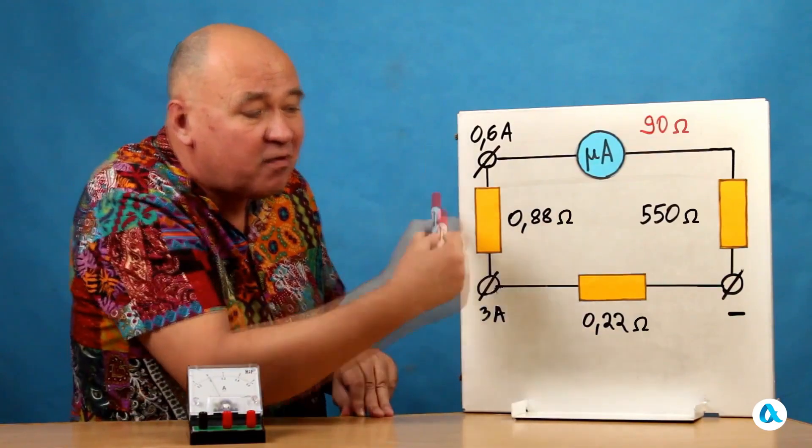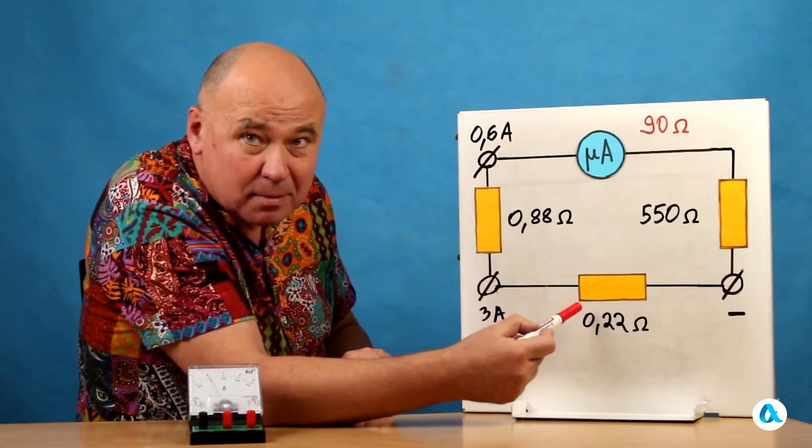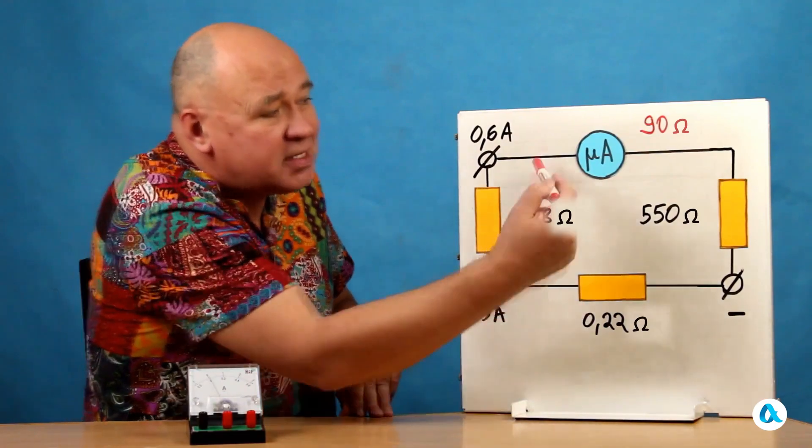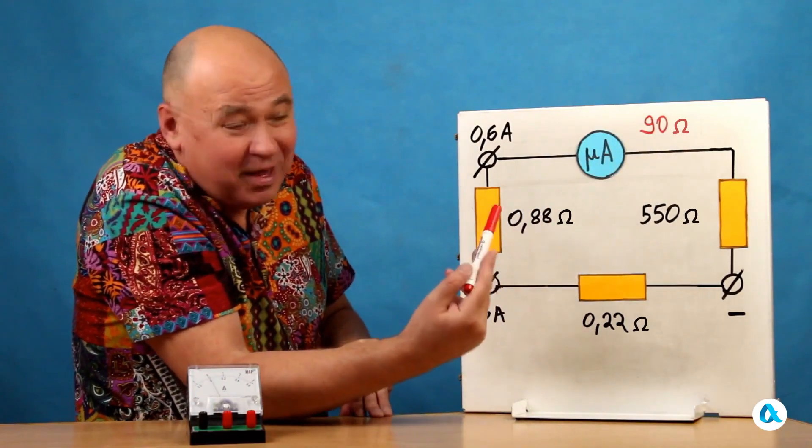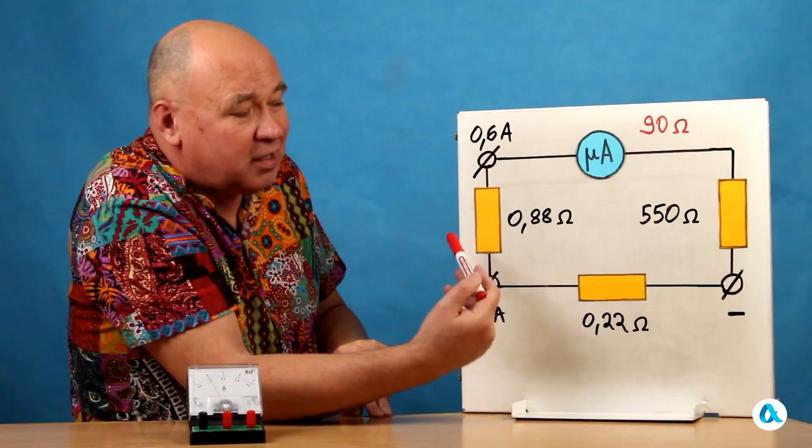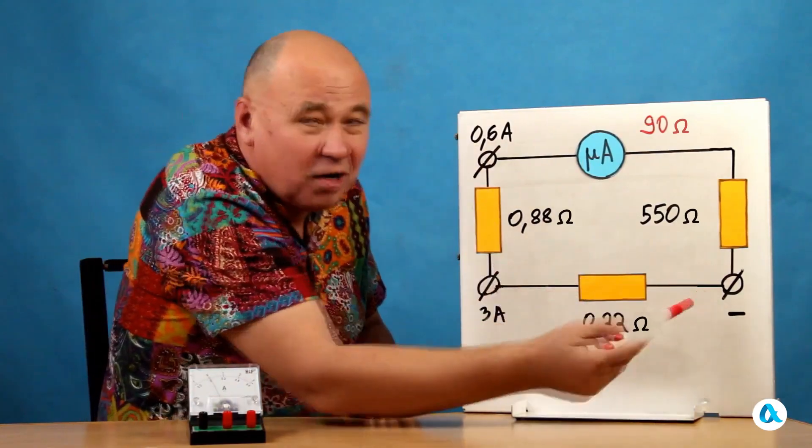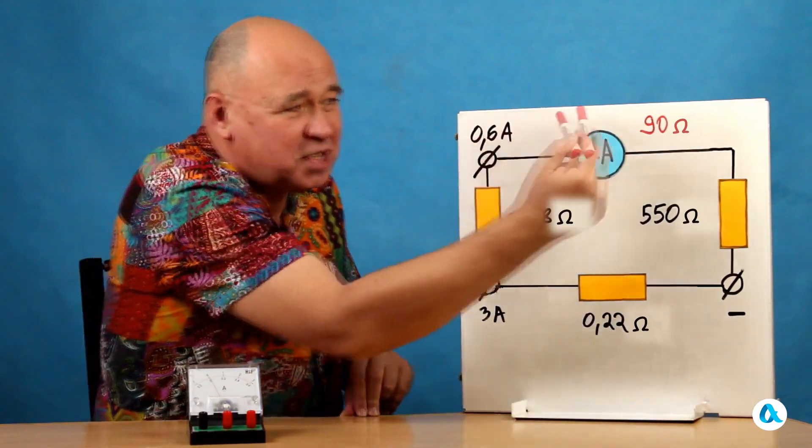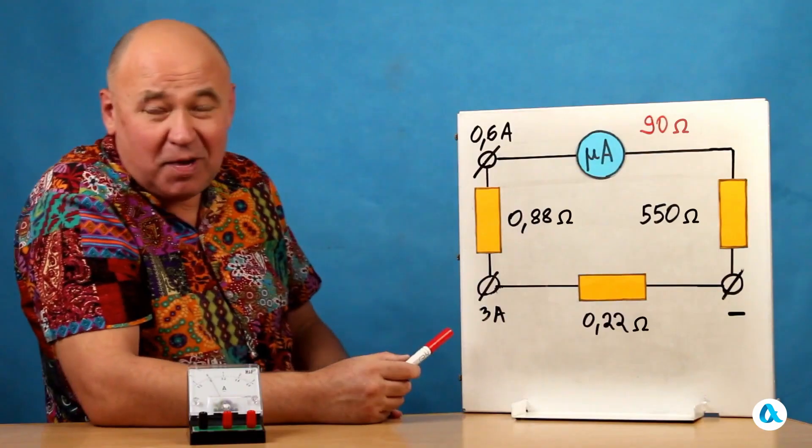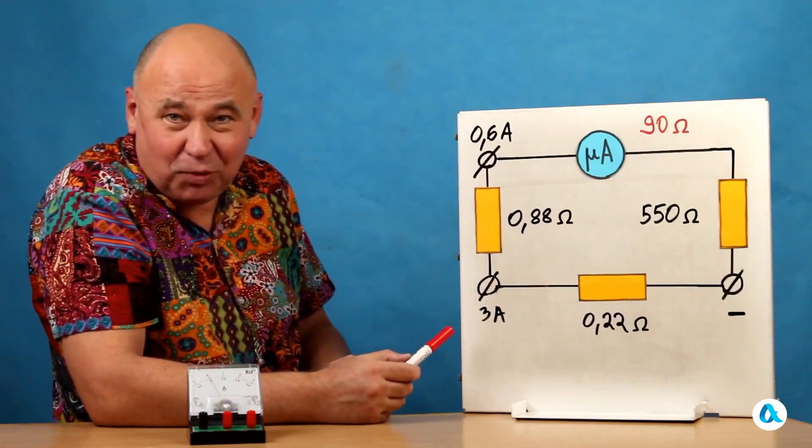So, the resistance has increased 5-fold. And accordingly, here it remains as it was. And that's why, when a current of 0.6 amperes flows here, exactly 1 milliampere will flow here. And the needle will deflect to the full scale.